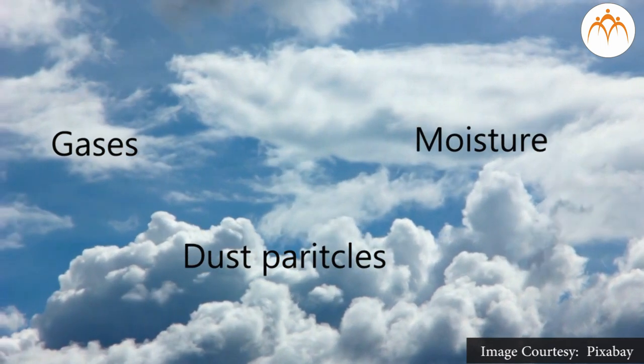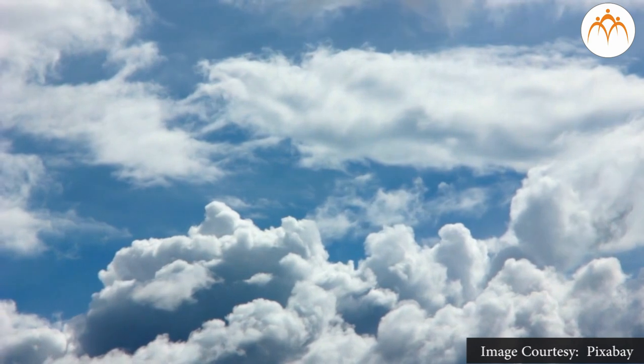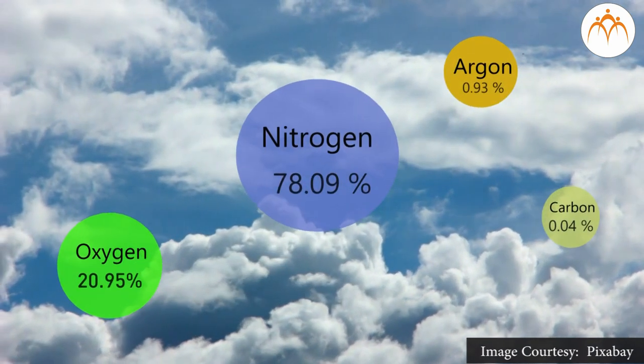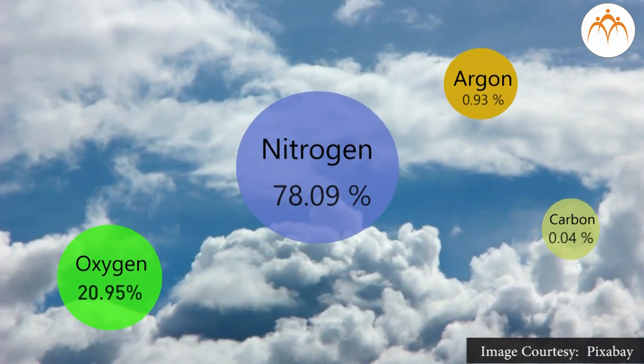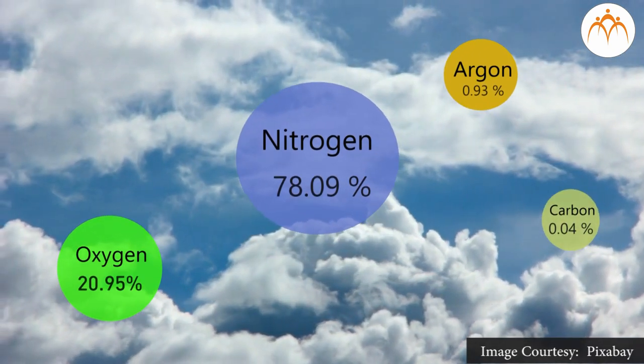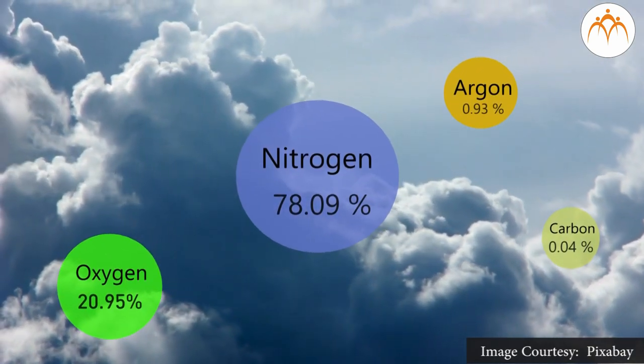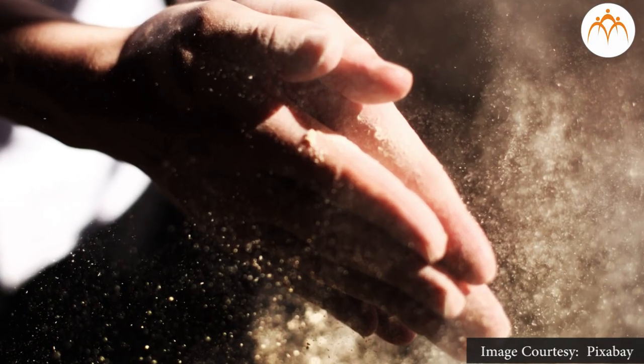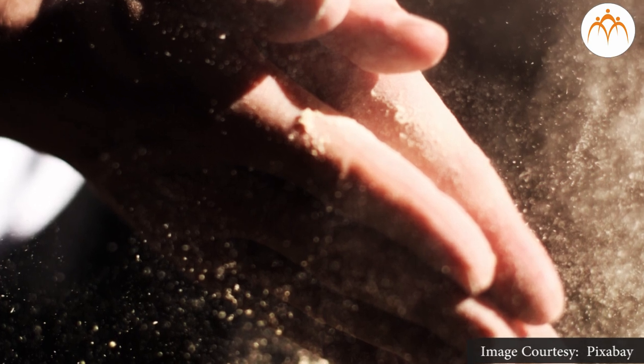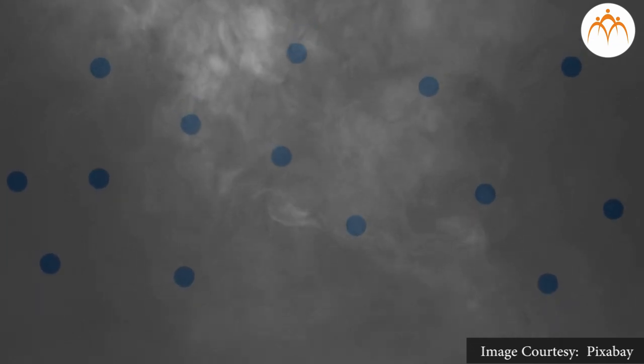Different gases, dust particles, and moisture are the main constituents of air. Among various gases, nitrogen is the main constituent at approximately 78.09%, oxygen at 20.95%, argon at 0.93%, and CO2 at around 0.04%. The moisture level above sea level is 1%, while higher in the atmosphere it is 0.4%. There are dust particles in the air, and moisture gathers around them. These dust particles are formed in several ways and play a very important role in the atmosphere.